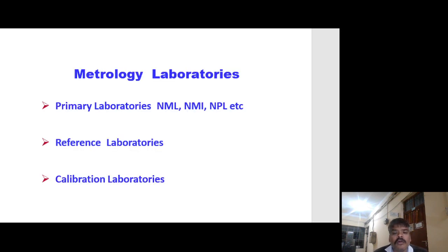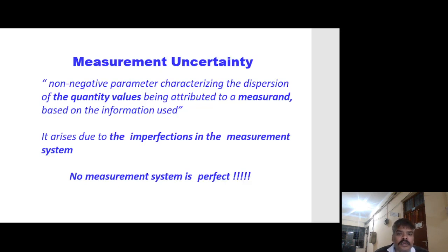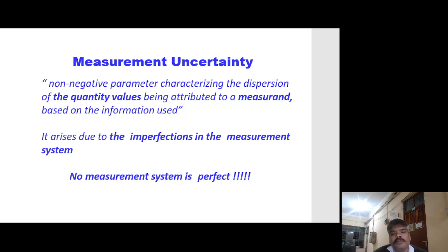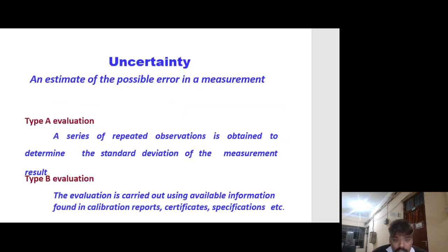Metrology laboratories include primary laboratories such as NML, NMI, and NPL, as well as reference and calibration laboratories. Measurement uncertainty is a non-negative parameter characterizing the dispersion of a quantity being attributed to a measurement based on the information used. It arises due to imperfection in the measurement system — no measurement system is perfect. These are some key points about measurement uncertainty: imperfection in the measurement system is the reason behind this uncertainty, which is essentially an estimate of the possible error in a measurement.